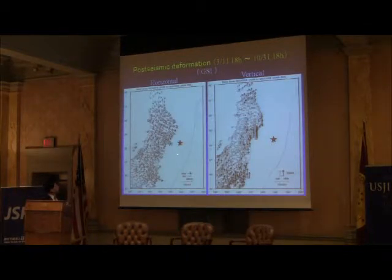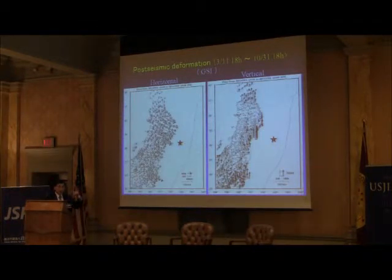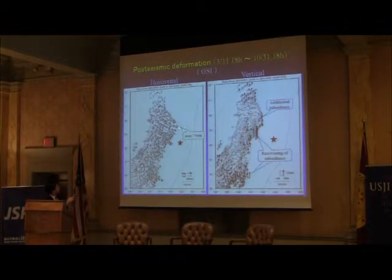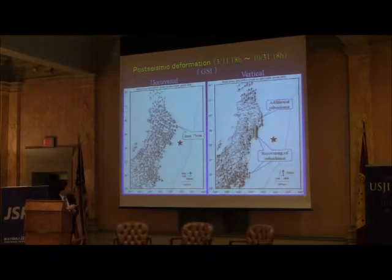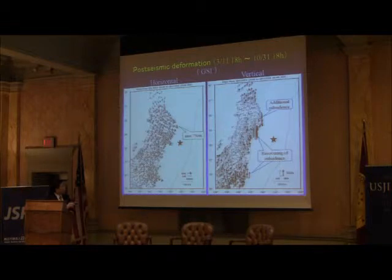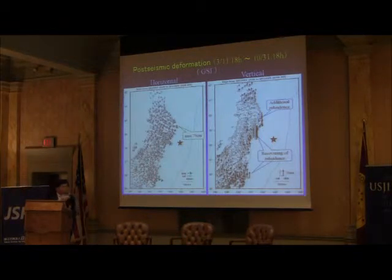After the earthquake's occurrence, movement did not stop — it's still moving very gradually without causing earthquakes. This shows that until the end of October, additional eastward movement continued, with a maximum of nearly 80 cm. The vertical after-effect is rather complex: the area from Sendai to Choshi is recovering from the subsidence at the time of the earthquake, but the Sanriku region shows additional subsidence. This movement is still ongoing, though the rate is decreasing.